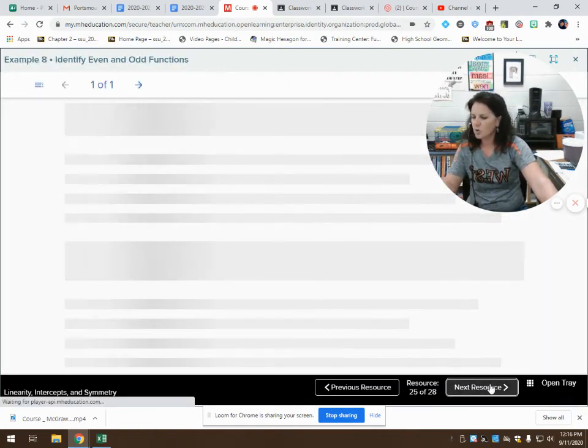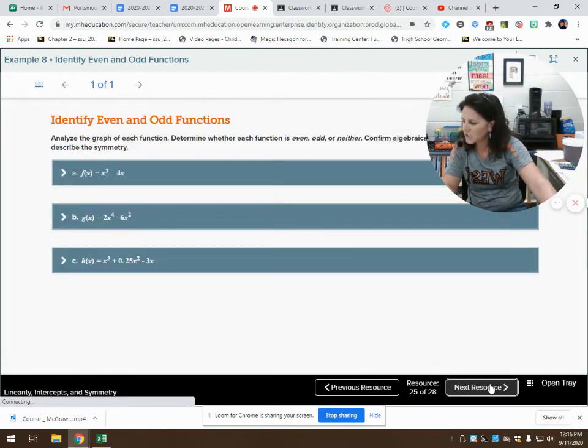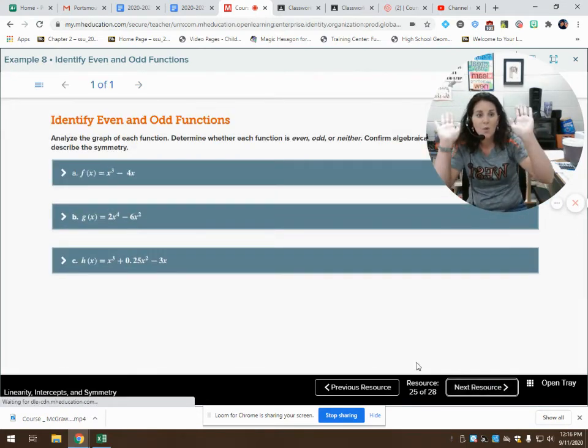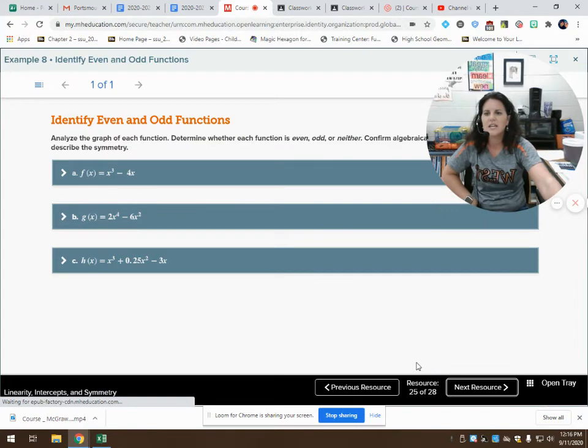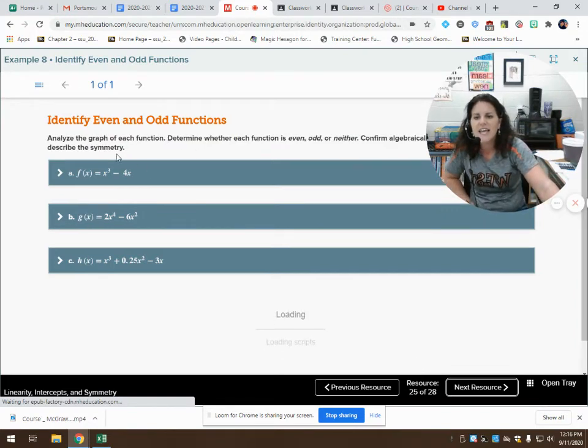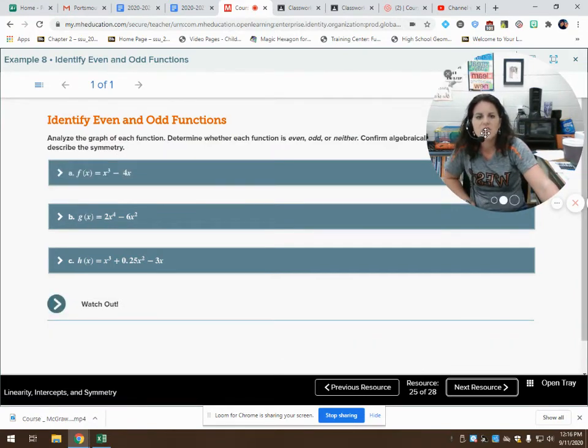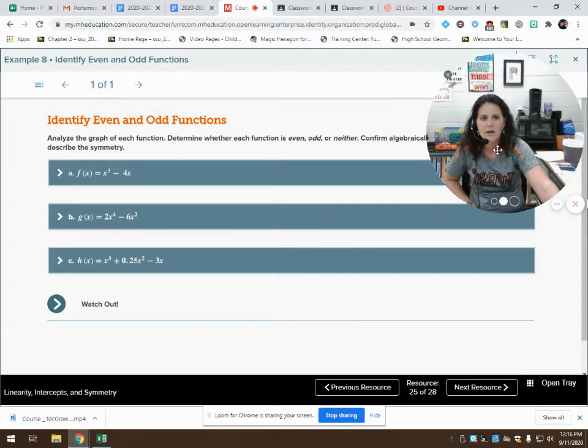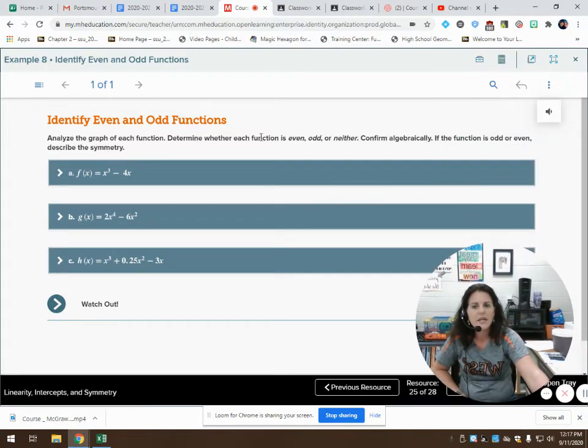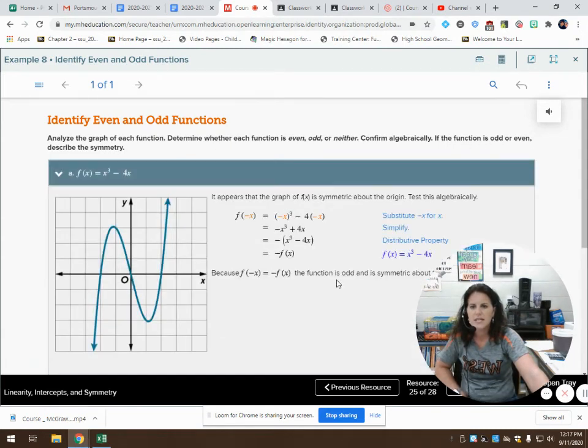That takes us now to example 8, which is our final example. Woo-hoo! And we are almost done. We're going to identify even and odd functions. So, we all know what even and odd are, but what are even and odd functions? To determine whether a function is even, odd, or neither, we're going to look at these problems, and we will confirm them algebraically if the function is odd or even describe its symmetry.